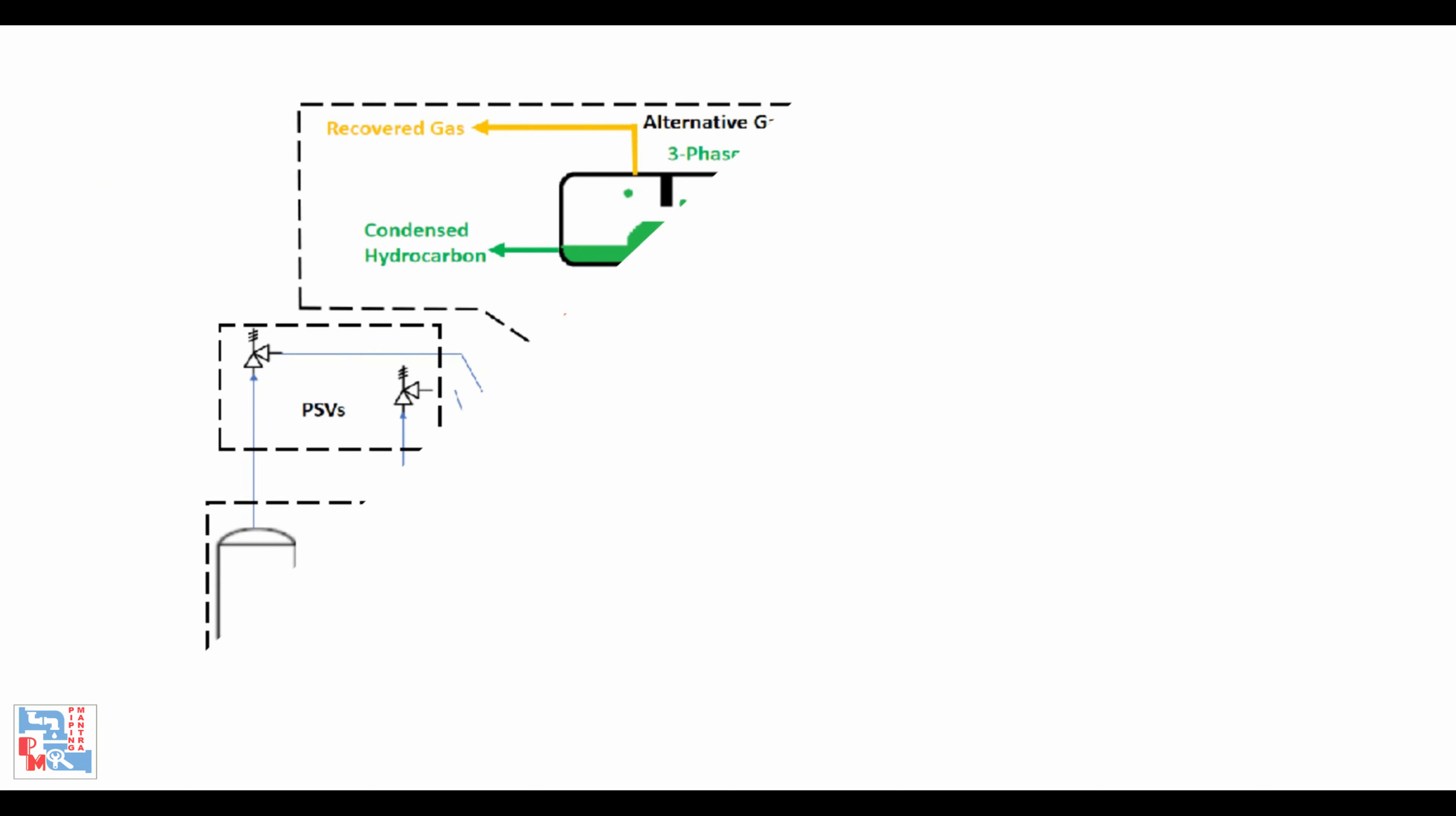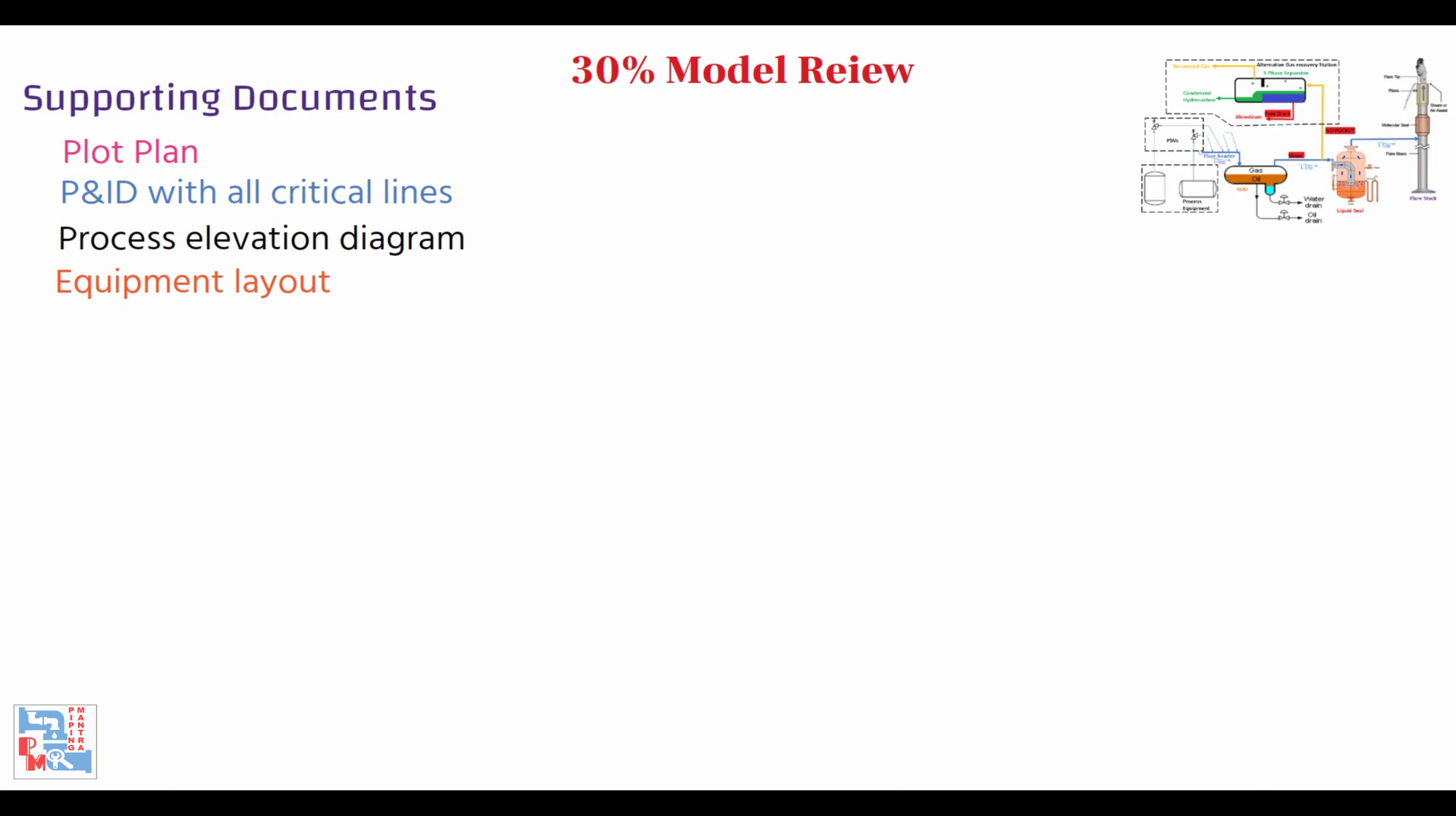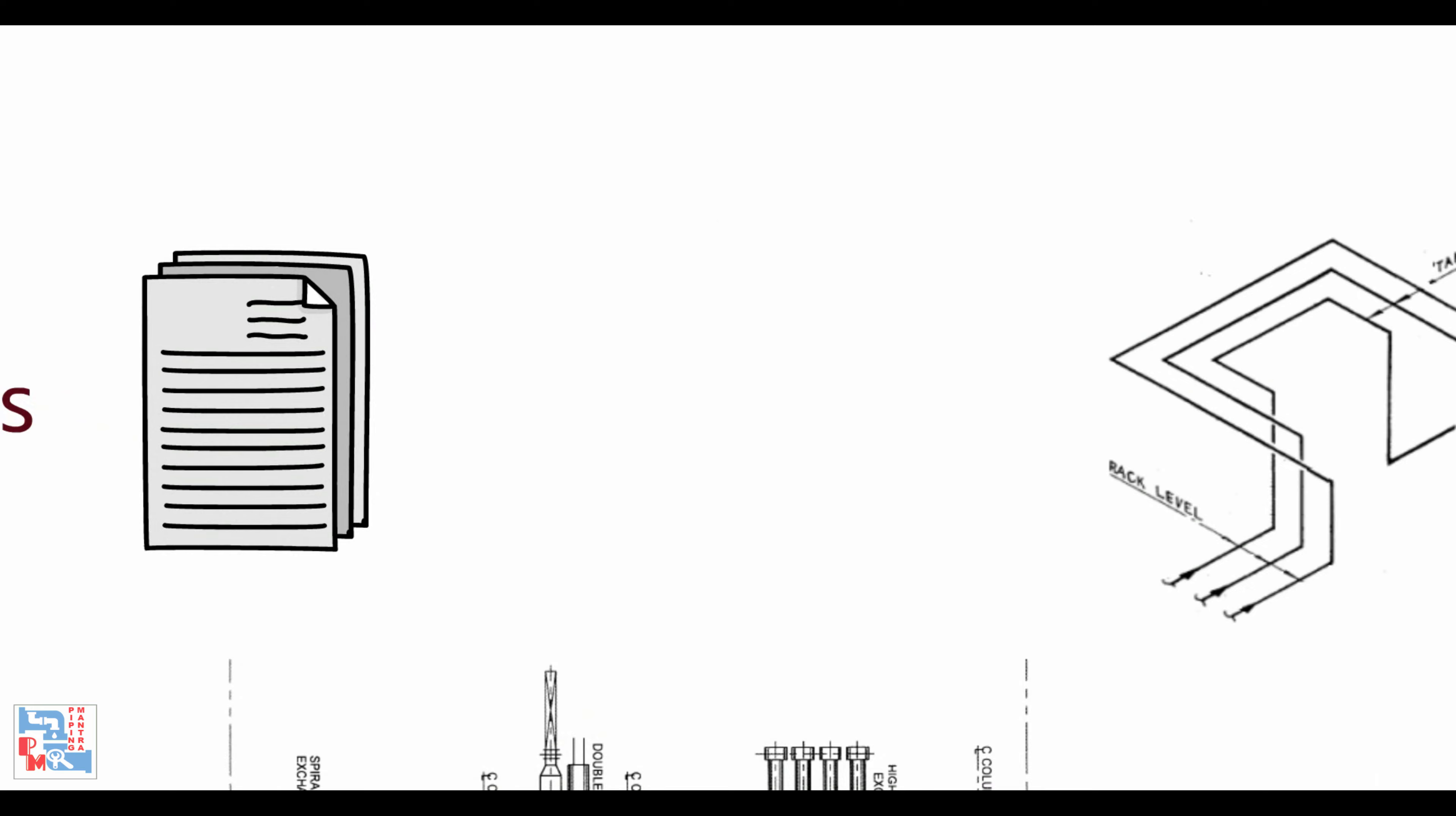The supporting documents required for a 30% model review are: plot plan, P&ID where line size is given for all critical lines, process elevation diagram where it has mentioned no pocket or free draining requirement between two equipments, equipment layout showing all the equipment and the preliminary location, piping spec, preliminary stress analysis to test critical lines to finalize loop locations.